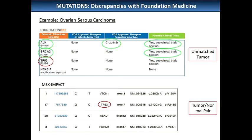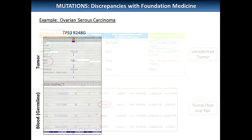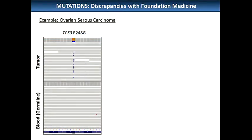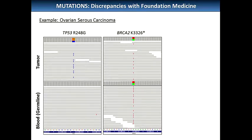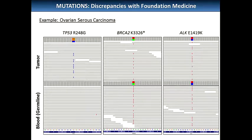These mutations weren't in the Foundation Medicine assay, so they weren't found. Looking at the raw data, the TP53 is in the tumor but not in the normal — both we and Foundation call that somatic. The BRCA is germline — we actually filter it and are not currently reporting these back to our clinicians. In the case of BRCA, we're getting less information than Foundation because we're filtering the germline data, which is clearly important. But the ALK is also germline — so here we benefit from having the normal because we can call this a SNP and say it's almost certainly not important.